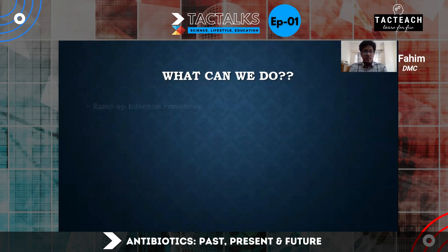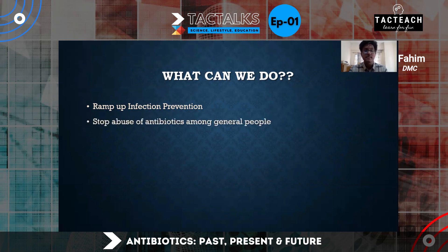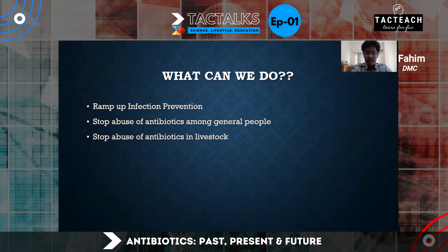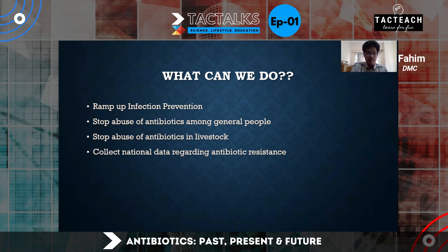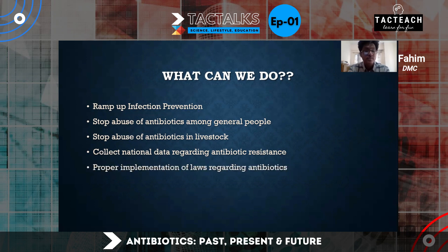So what can we do right now? First and foremost, prevention is better than cure — ramp up infection prevention. Stop the abuse of antibiotics among the general public; irrational use of antibiotics must end. Stop antibiotic abuse in livestock. Collect national data regarding antibiotic resistance so that antibiotics are properly prescribed. And finally, implement proper laws and regulation regarding antibiotic use.